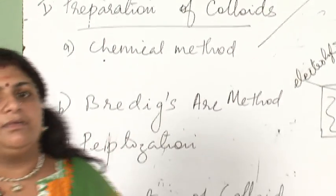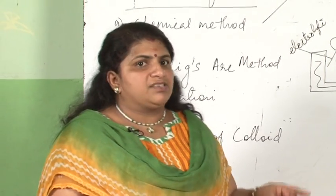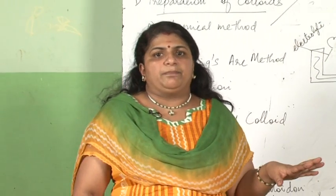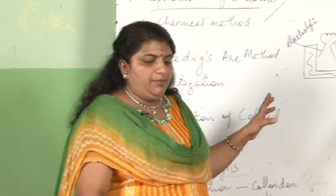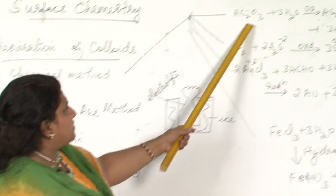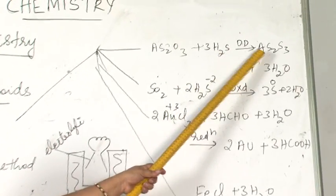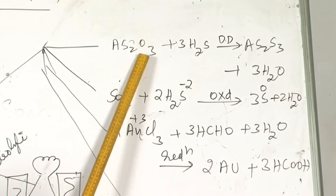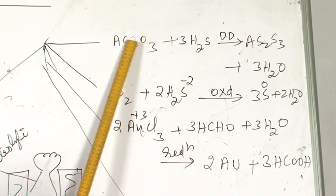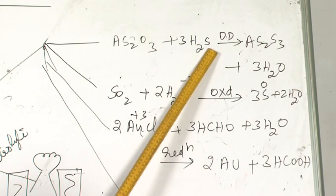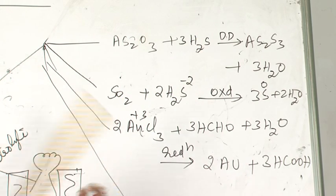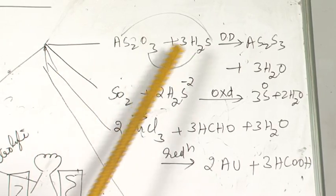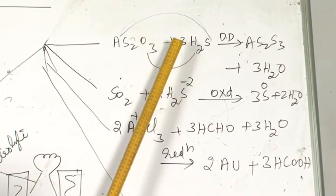As the name indicates, the chemical method uses chemical reactions — double decomposition, oxidation, reduction, and hydrolysis for the preparation of colloids. The first reaction: arsenous oxide reacts with hydrogen sulfide to form As₂S₃ and H₂O. It is a double decomposition — this compound and H₂S are both decomposed; the arsenic part combines with sulfur and the hydrogen part combines with oxygen. This is called double decomposition.